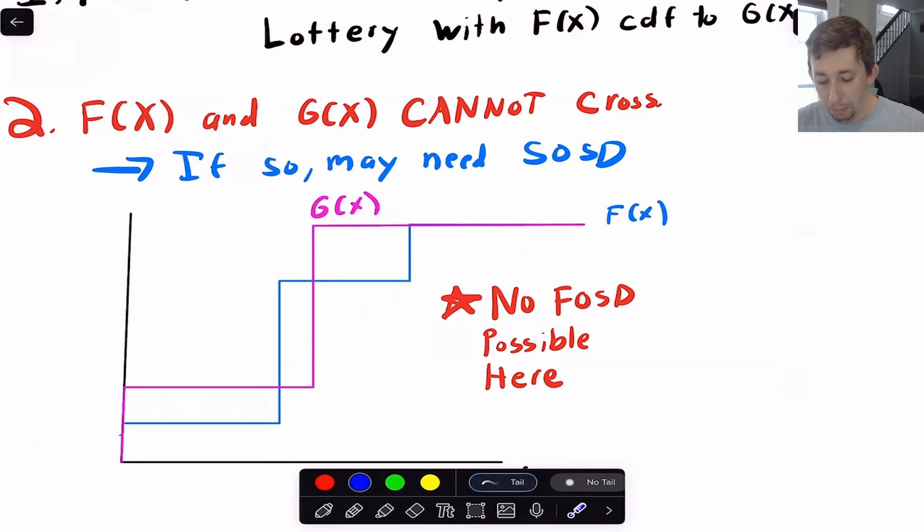The reason that is, is the whole point of first-order stochastic dominance is we're trying to say, any utility maximizer, anyone who's looking at these two lotteries, regardless of their risk preferences, if one first-order stochastically dominates another, then any utility maximizer would pick the lottery that first-order stochastically dominates the other. And so the reason why crossing doesn't work is because if you're risk-averse or risk-loving or risk-neutral, depending on where your risk preferences fall, you might not always choose F of X as opposed to G of X. It might depend exactly on your risk preferences. And here we're saying your risk preferences shouldn't matter.